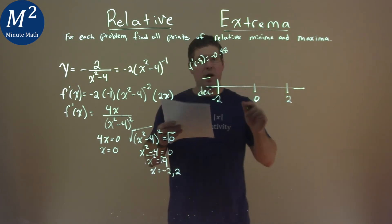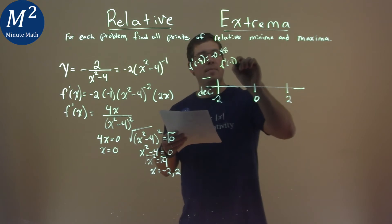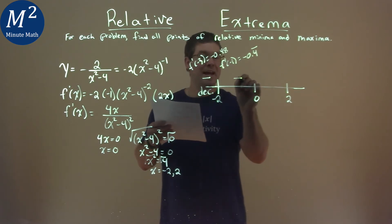Now between negative 2 and 0, I picked negative 1, so f prime of negative 1 comes out to be negative 0.4 repeating. It's just negative, so we're decreasing on that interval.